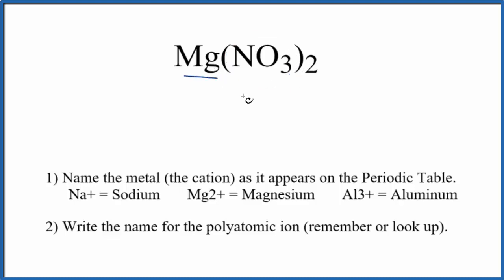Then we have Mg, which is a metal. So we have a metal and these non-metals in this polyatomic ion here. This is an ionic compound. So let's first write the name for the metal, Mg. That's magnesium.